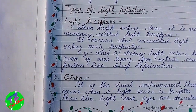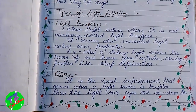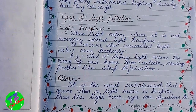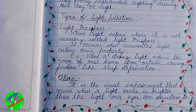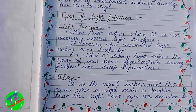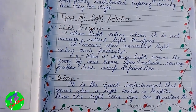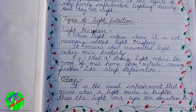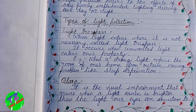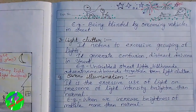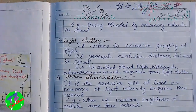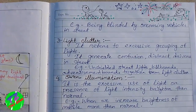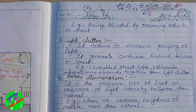The next type is glare. Glare is the visual impairment that occurs when a light source is brighter than the light our eyes are accustomed to. An example of glare is being blinded by oncoming vehicles on the street.